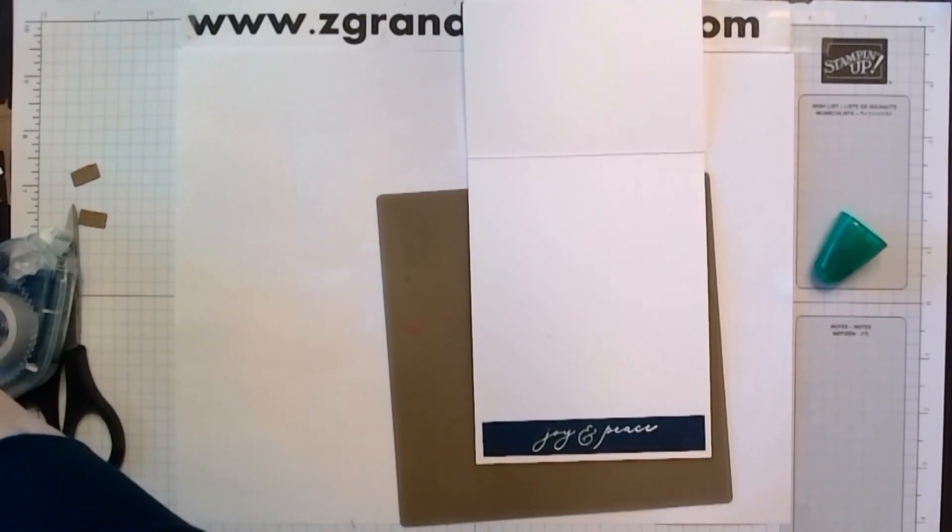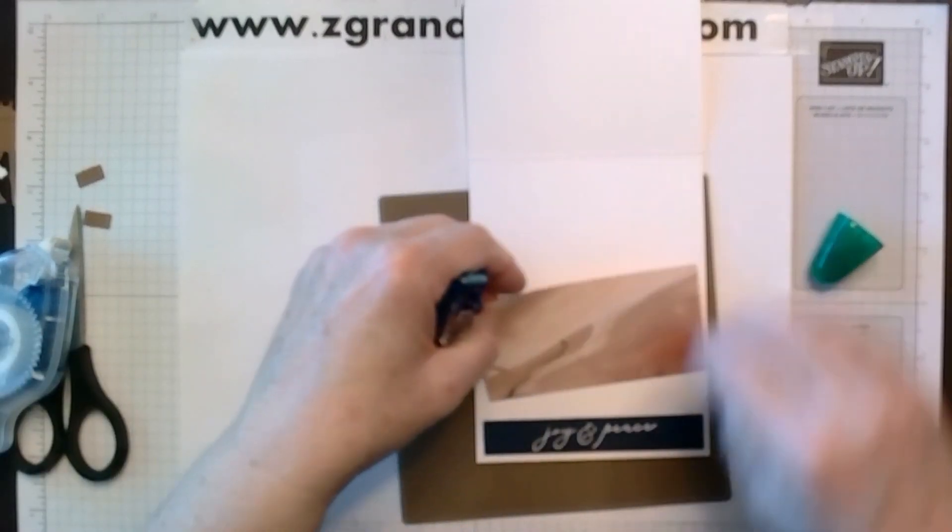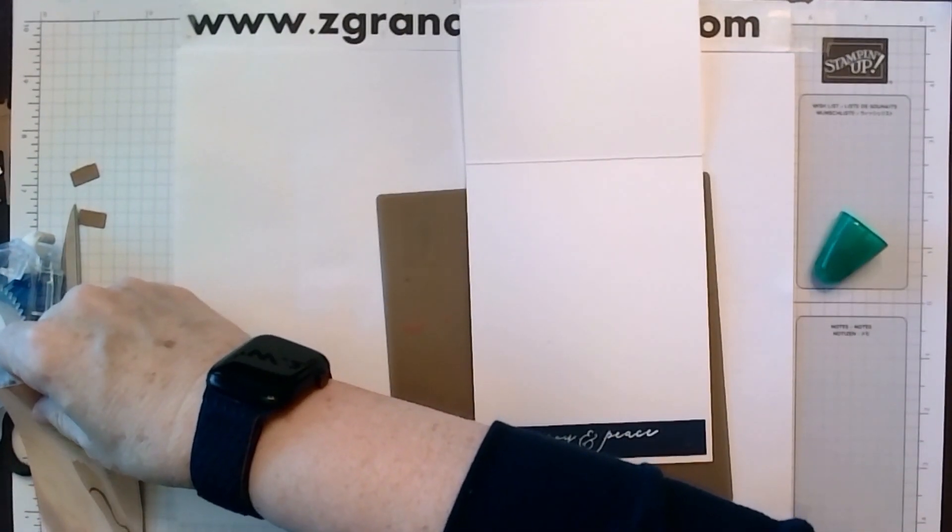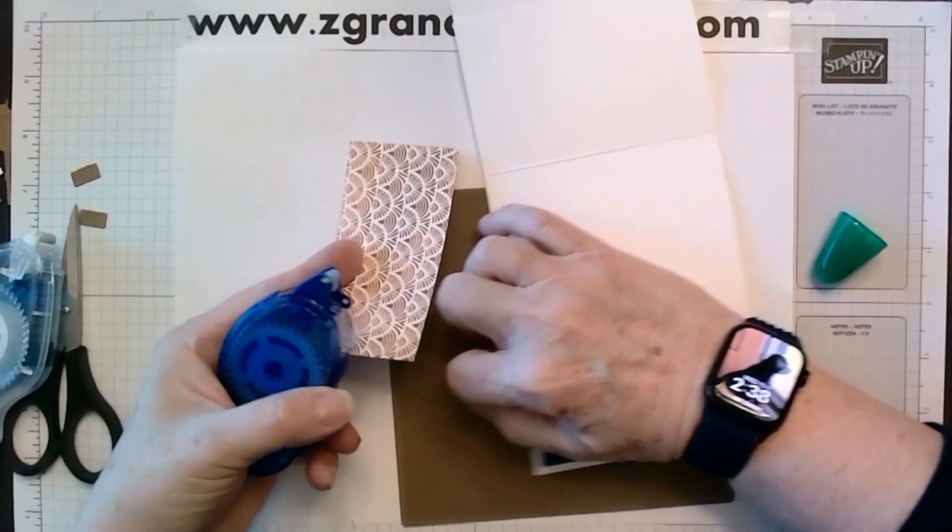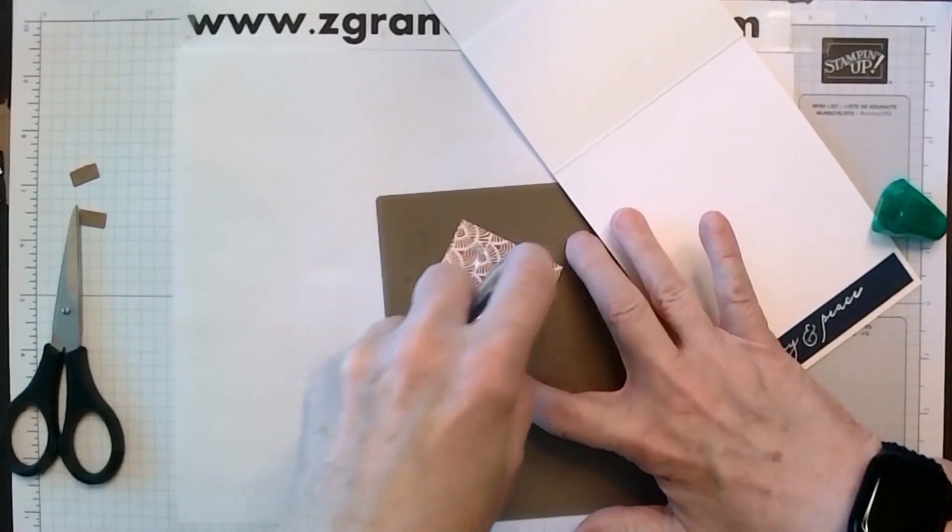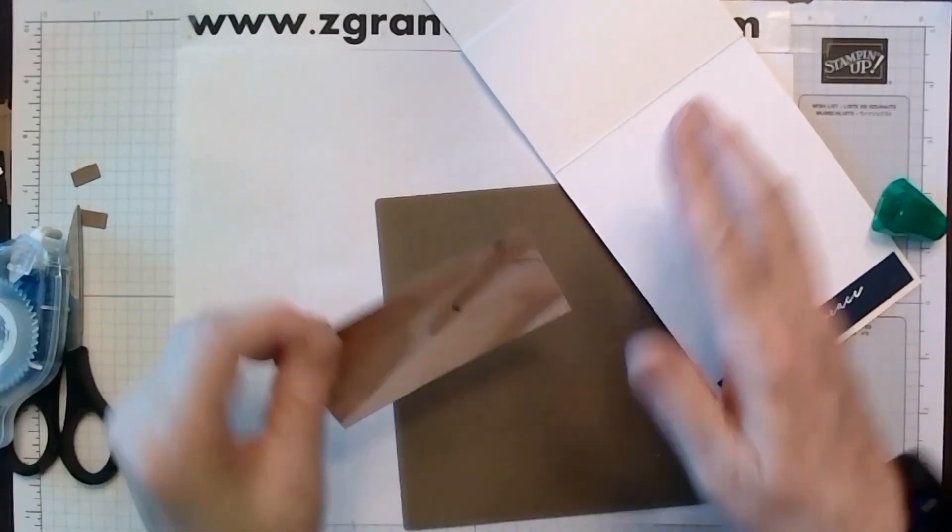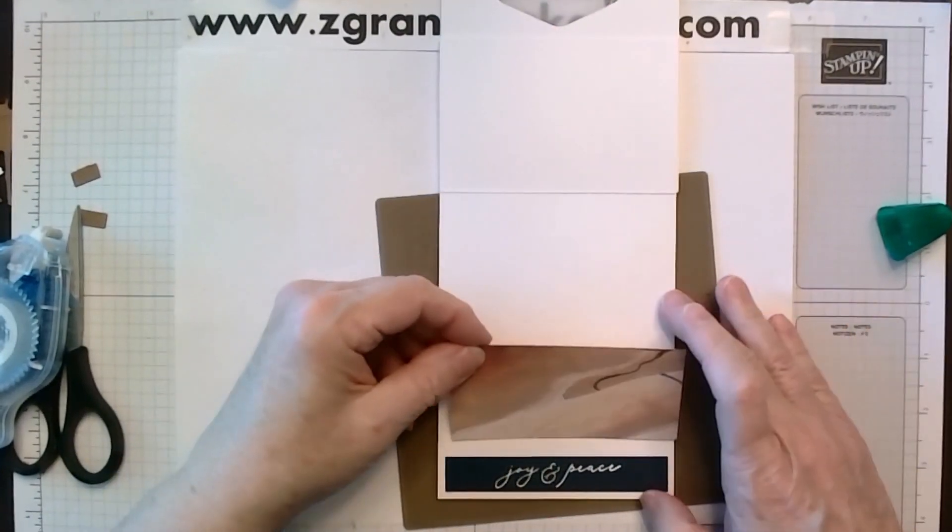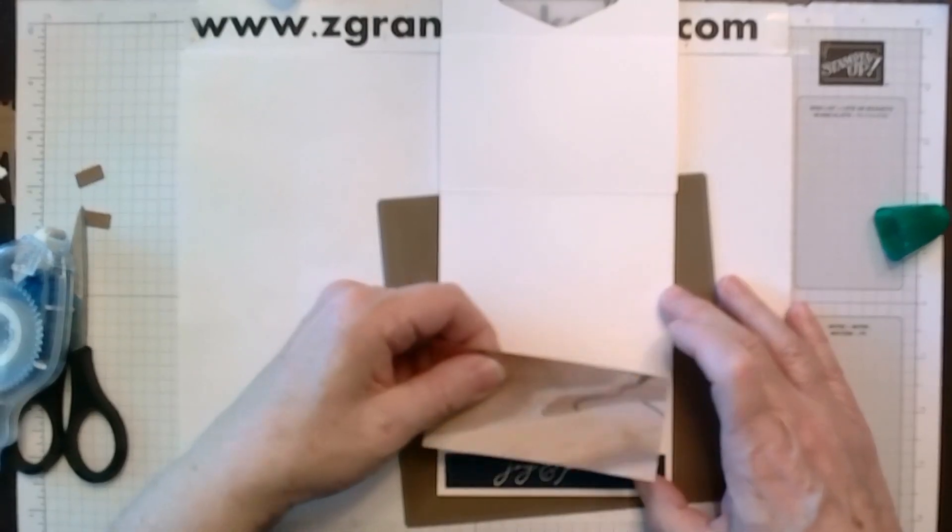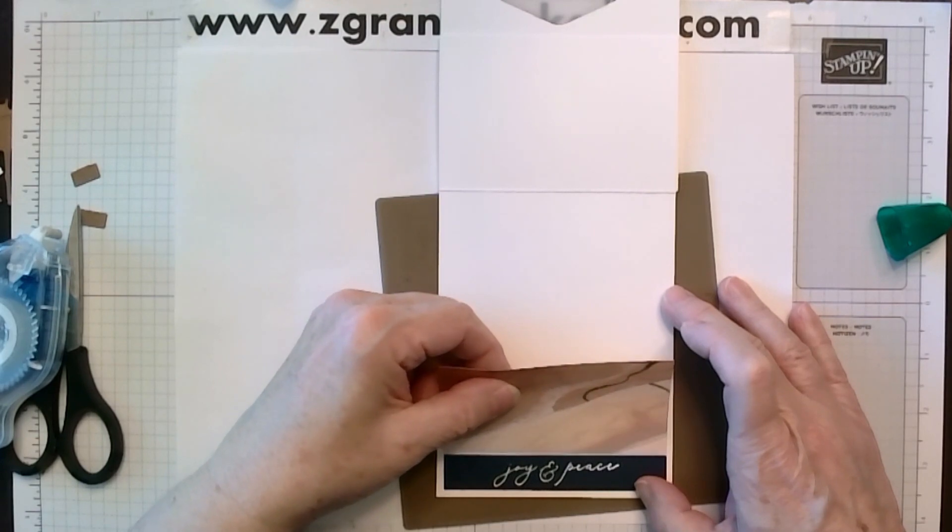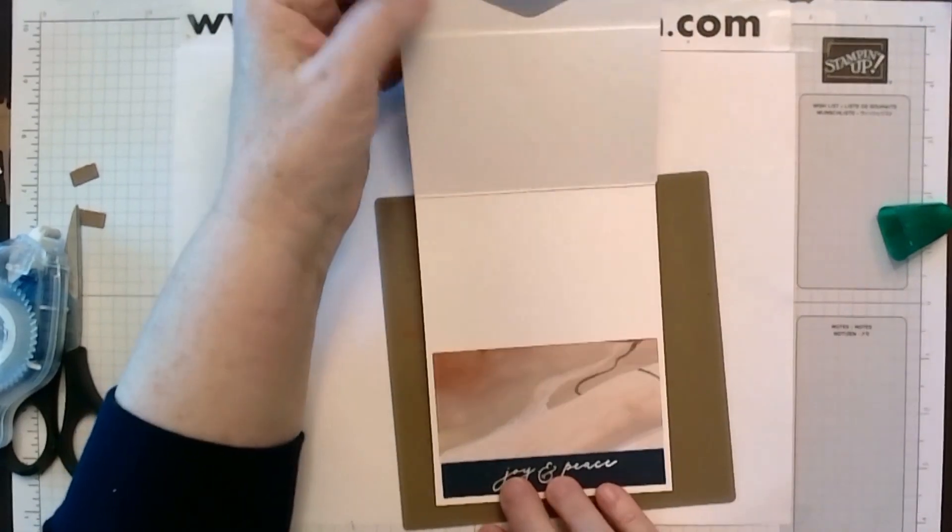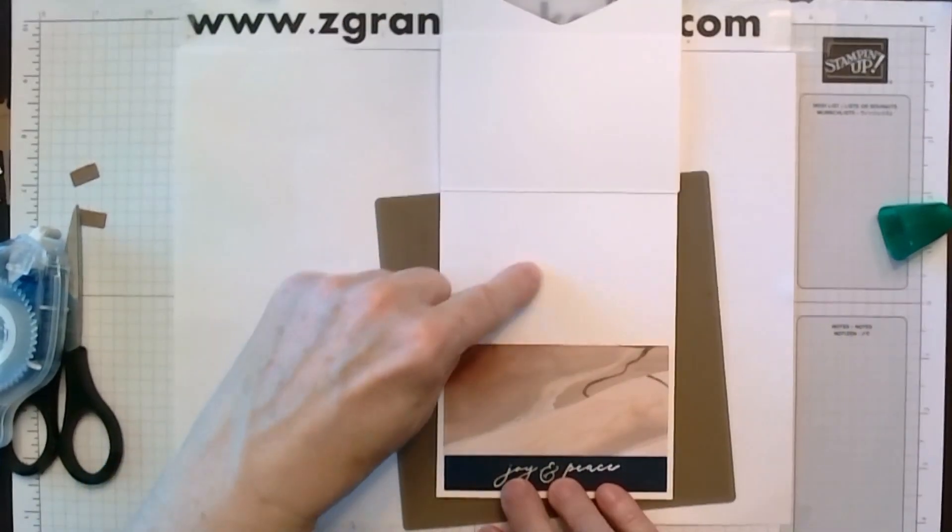Then I have a piece of designer paper, the brown that's in that set. And this is two by four. We'll just put that on. Whichever way you think looks best. It doesn't really matter. And just set that right above that little border. And then they have plenty of room to write on this part or this part.